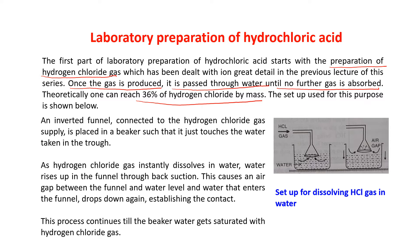The setup used for the preparation of HCl in the laboratory uses an inverted funnel connected to the hydrogen chloride gas supply. The funnel is placed in a beaker such that it just touches the water taken in the trough. The delivery tube of the funnel is connected to the HCl gas supply, and the funnel just touches the surface of the water in the trough.